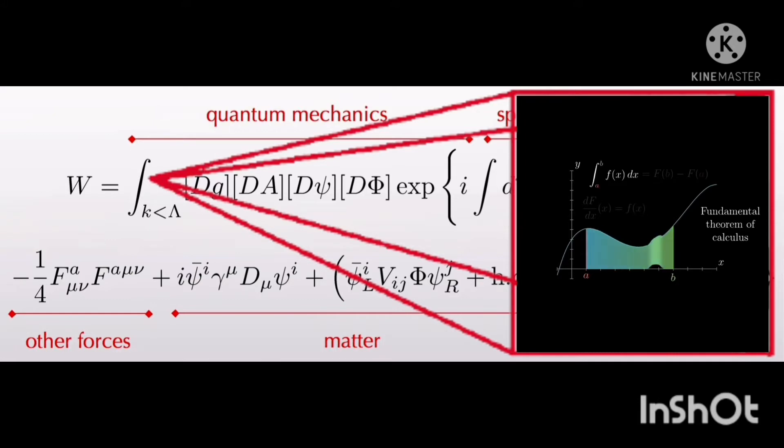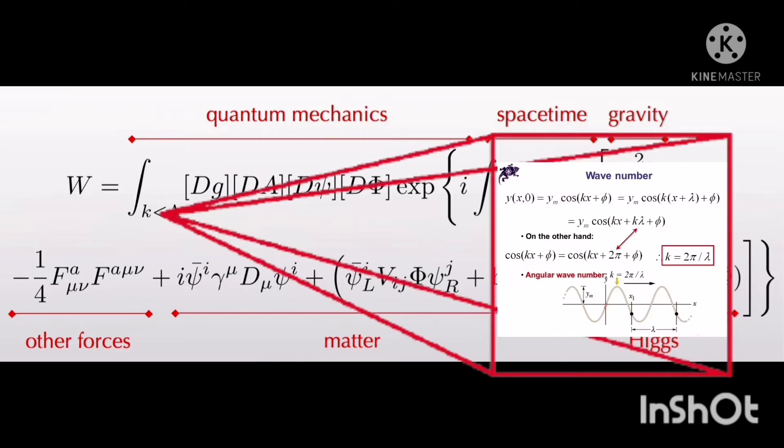In physics, a field is merely a value for each point in space and time. K is the wave number of a particular mode in a field.